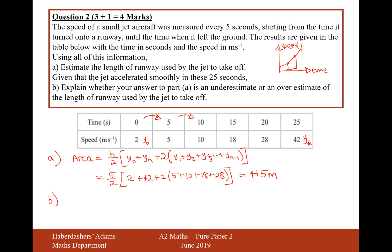So there we are. Given that the jet accelerates smoothly in these 25 seconds, explain whether your answer to part a is an underestimate for the overall length of the runway. Explain why it's an underestimate or an overestimate.